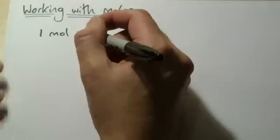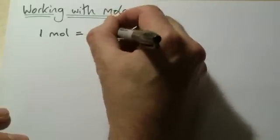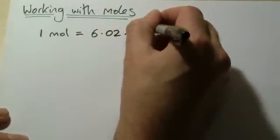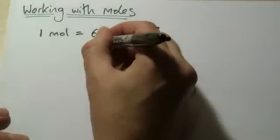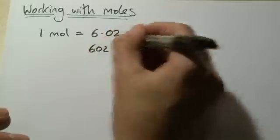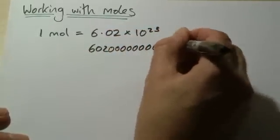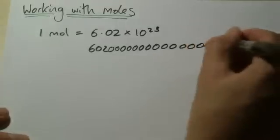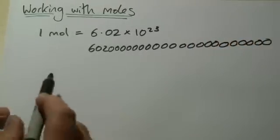If we're going to work with different atoms and elements, we need to know how many atoms are in a certain amount. It turns out a mole is just a number: 6.02 × 10^23, which is also known as Avogadro's number.